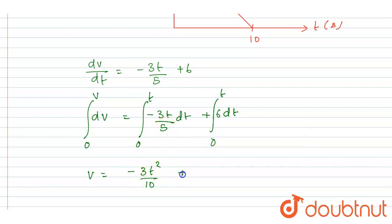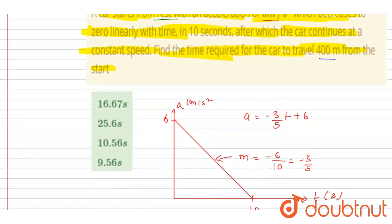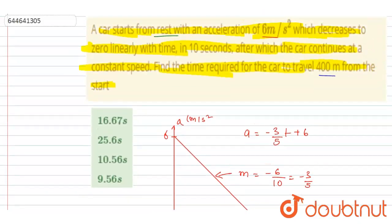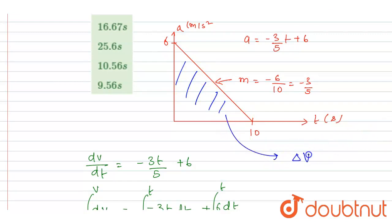After putting in the limits, the acceleration decreases linearly to zero in 10 seconds, after which the car moves with constant speed. We can get the constant speed after 10 seconds by calculating the area under the acceleration-time graph. Area equals base times height divided by 2, which gives 30 meters per second.